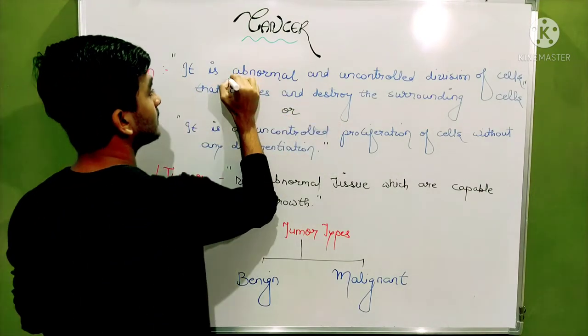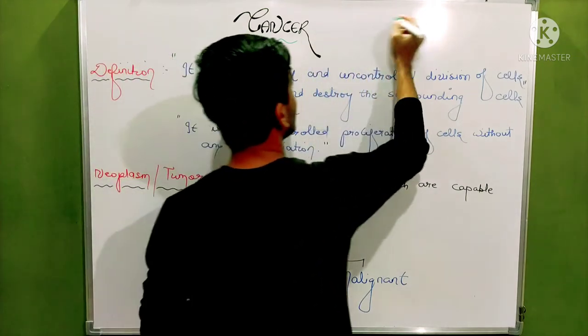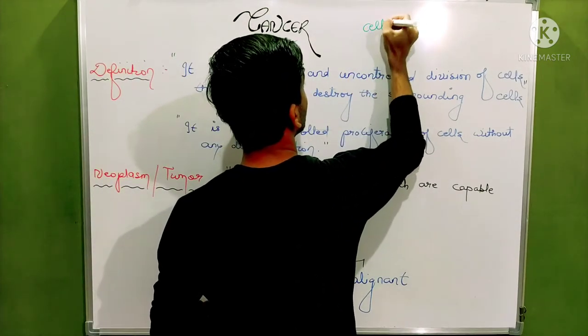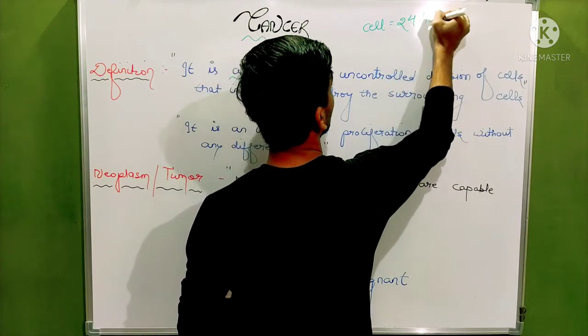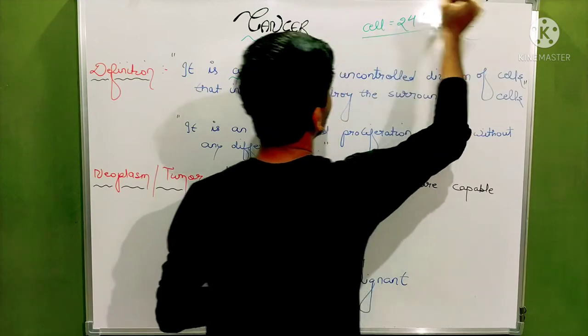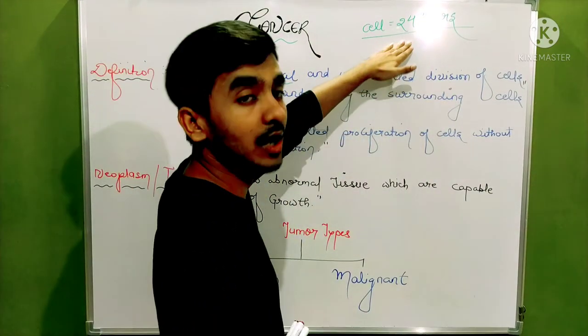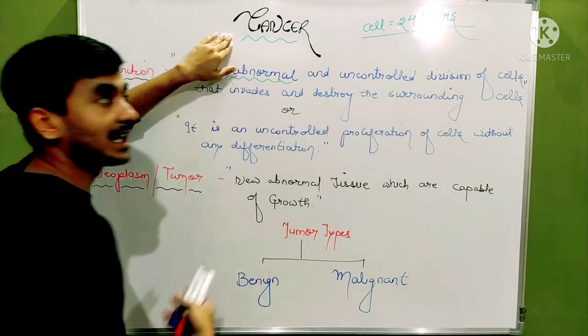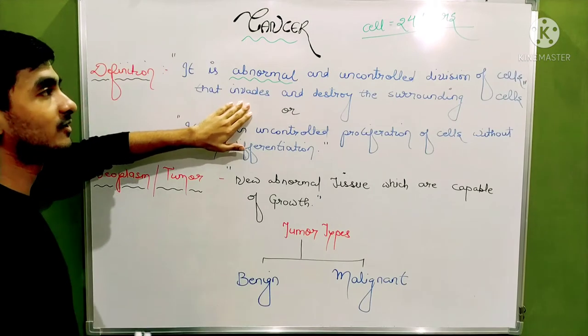What is abnormal and why has this term been used? Abnormal means that generally normal cells of human body divide every 24 hours. One cell undergoes mitosis to form 2 cells in 24 hours. That is normal cell division. But if cells divide at other rate, this is called abnormal growth of cells.